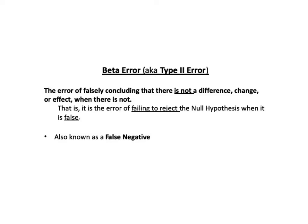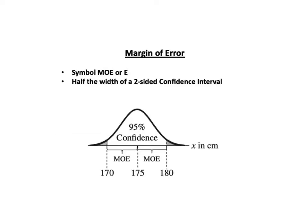The margin of error, or MOE, is half the width of a two-sided confidence interval. For example, you may have heard something like this on the radio or TV: with a 95% level of confidence and a margin of error of plus or minus 2%, we predict that candidate A will get 54% of the vote. The plus or minus 2% is the margin of error. For a more in-depth treatment, see the upcoming video on margin of error, or read the book.